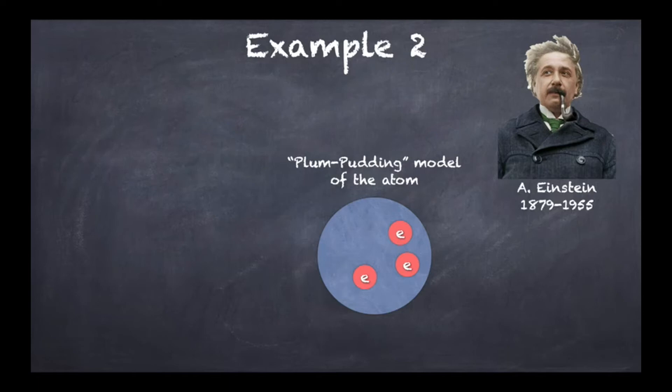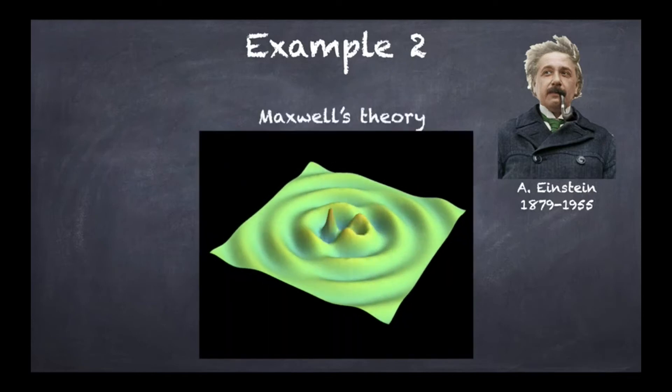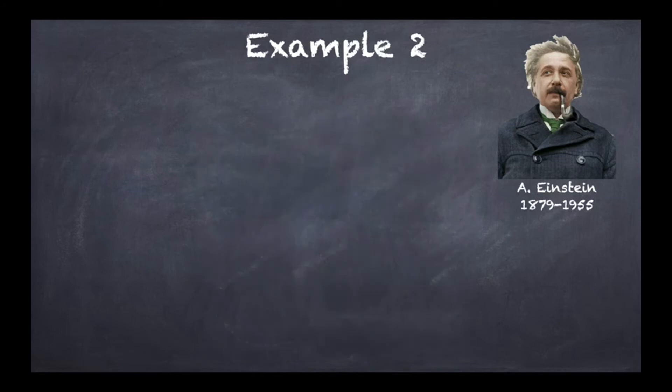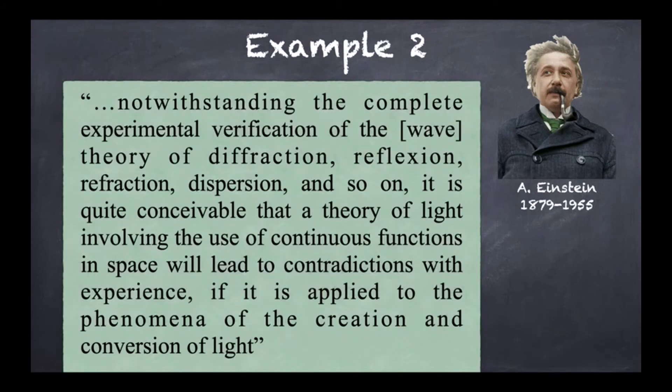Now the problem with this picture is that although it seems to be able to explain what is going on for this very specific phenomenon, it turned out that it was in total contradiction with Maxwell's wave theory of light, which stated that light was an electromagnetic wave. In fact, Einstein himself says in the paper—it's going to be put in the description—'notwithstanding the complete experimental verification,' so here please notice, 'the complete experimental verification of the wave theory of diffraction, reflection, refraction, dispersion, and so on.'